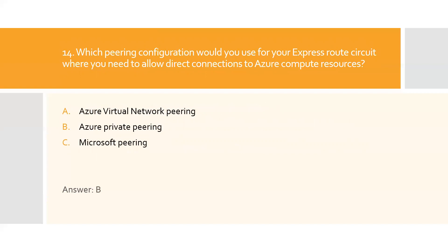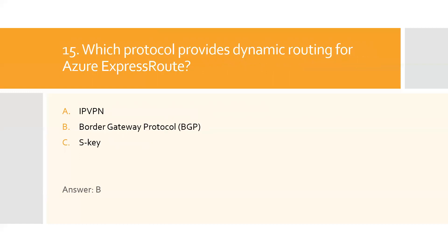Question fourteen: Which peering configuration would you use for your ExpressRoute circuit where you need to allow direct connection to Azure compute resources? A) Azure virtual network peering, B) Azure private peering, C) Microsoft peering. Option B is the right answer. Azure private peering lets you directly connect to virtual machines and cloud services on their private IP addresses.